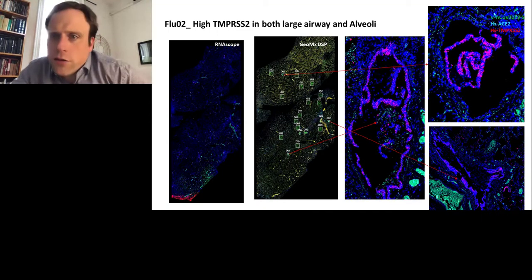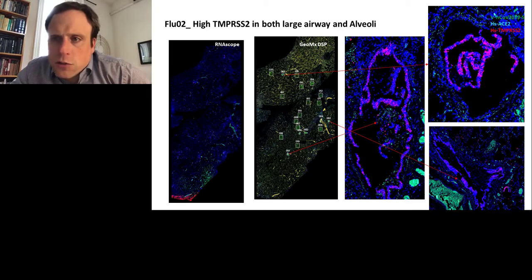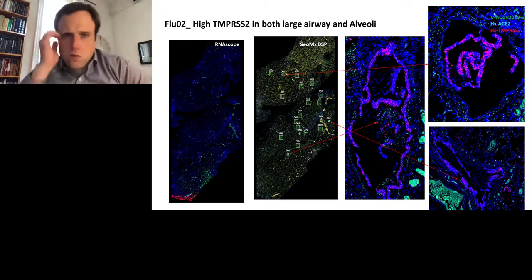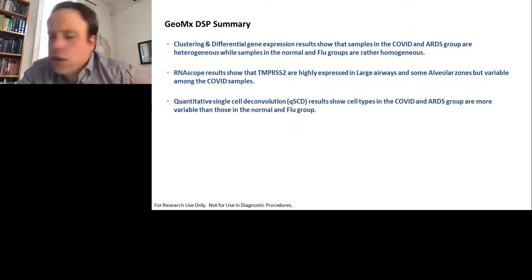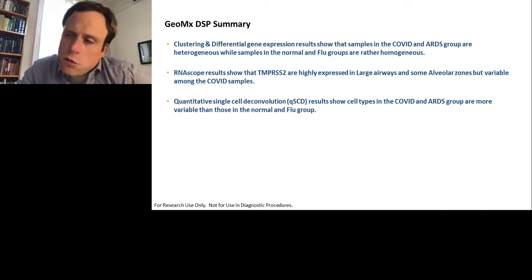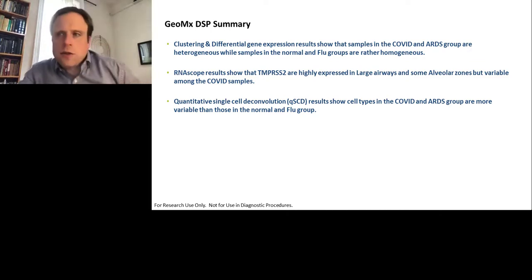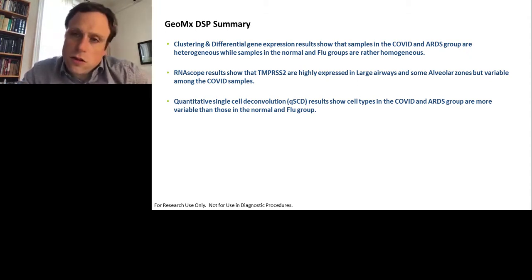So if I summarize what we have to this part of the talk before I get into the third part of the discussion is, we could see clustering and differential gene expression results. There are two heterogeneous groups, especially for COVID and ARDS. And normal and flu samples did seem to be more consistent. We did not segregate yet whether it was influenza A or B, but we can see that we just put them as flu. And so we wouldn't have enough samples to really tease out subtypes of influenza quite yet. We can see here that they're fairly homogeneous. We saw that the RNA scope results, we saw that TMPRSS2 is highly expressed in large airways, and sometimes alveolar sacs, but it was also extremely variable in COVID samples. It could be working from highly dense to non-existent, depending on where you look in the lung. Finally, the QUSCD, or single-cell deconvolution showed that we could get the cell types that are present in COVID are more variable. In particular, we saw a huge burst of macrophages in some of the patients that really, I think, indicated some of the immune stress and tissue stress that would be as a result of it.